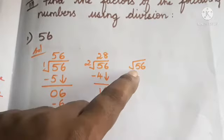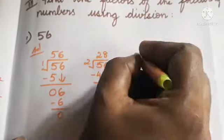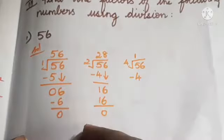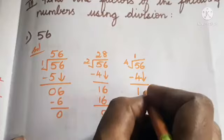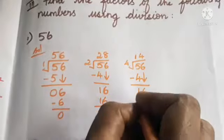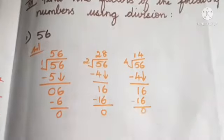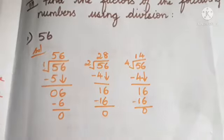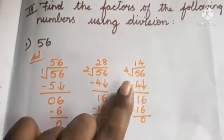Now check 4. In the tens place, one 4 is 4; 5 minus 4 is 1. Bring down 6 to get 16. How many 4s are in 16? Four 4s are 16; 16 minus 16 is 0. The remainder is 0, so 4 and 14 are factors of 56.